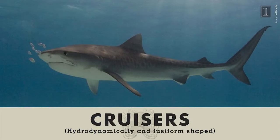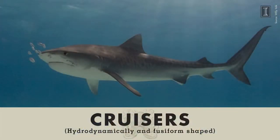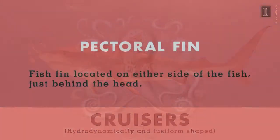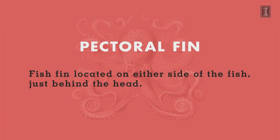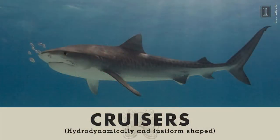Cruisers are hydrodynamically shaped, really sleek fish with a fusiform body shape that cuts through the water easily. They can travel for miles underwater with very little expenditure of energy. A shark is a great example — they have stiff pectoral fins that slice through the water, a sleek body, and just a little flick of the tail sends them right through the water.